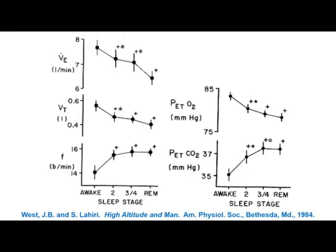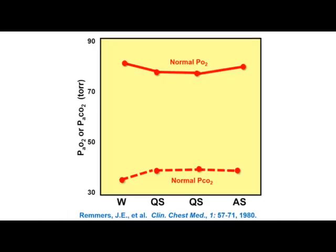This plots ventilation and gas exchange in a normal individual during sleep. From wakefulness through non-REM sleep to REM sleep, total ventilation decreases, tidal volume decreases, and rate increases to some extent. End-tidal oxygen gradually decreases in non-REM compared to wakefulness and a bit more in REM. CO2 increases in non-REM and REM compared to wakefulness. The magnitude of change in O2 and CO2 is not great in normal individuals.